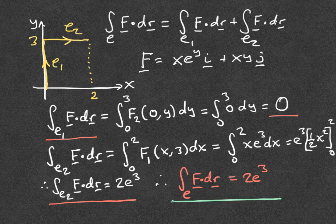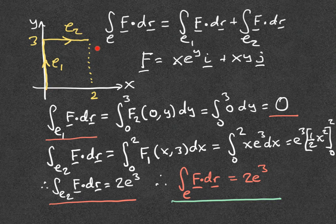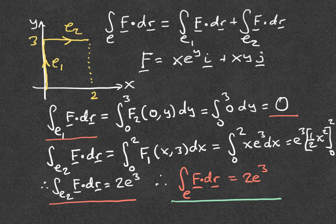This is an example of how line integrals can be and generally are path-dependent. There are special important cases where the answer is independent of path when going between two fixed points, but that's something to discuss later. I hope this has given you more confidence with calculating line integrals of vector fields over lines parallel to the x-axis or y-axis.